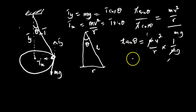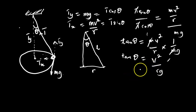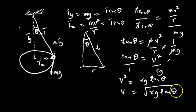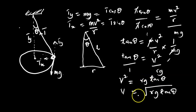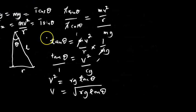The m's cancel, so tanθ equals v² / rg. I'm driving toward the velocity of the pendulum, so making v the subject: cross-multiplying gives v² = rg tanθ, therefore v equals the square root of rg tanθ. This is the velocity of the pendulum that is being swung.